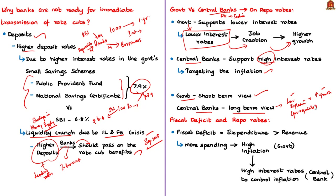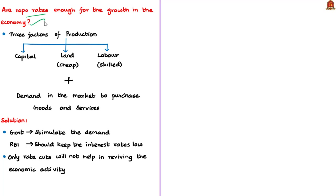The article also notes that the government's fiscal deficit must be considered when fixing repo rates. Fiscal deficit means government expenditure exceeds revenue — higher spending leads to more inflation in the market. Therefore, central banks often keep interest rates high to control inflation resulting from fiscal deficits. The article then questions whether lowering repo rates alone is enough to grow the economy.